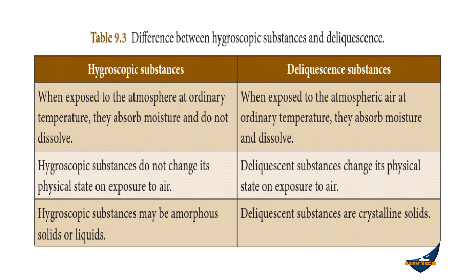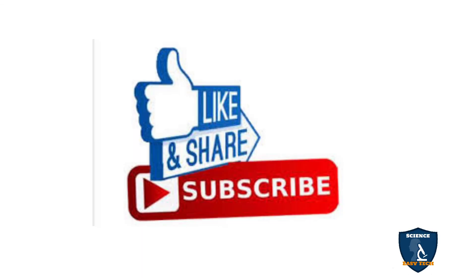Differences between hygroscopic and deliquescent substances: Hygroscopic substances absorb atmospheric moisture but the substance does not dissolve in it, whereas deliquescent substances absorb atmospheric moisture and dissolve in it. Hygroscopic substances do not change their physical state, but deliquescent substances change their physical state on exposure to air. Hygroscopic substances may be amorphous solids or liquids, but deliquescent substances are always crystalline solids.